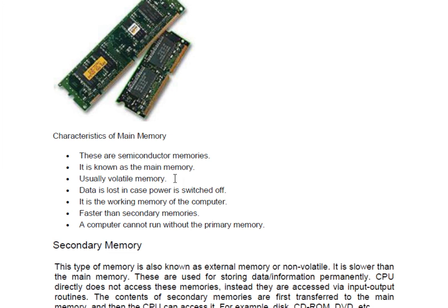Data is lost in case of a power switch-off, as explained. Primary memory is also known as working memory for the computer — while we are working with the computer, it is always active; otherwise we can't do work. It is faster than secondary memory. Most importantly, the computer cannot run without primary memory — even to start the computer, primary memory is needed, that is, both ROM and RAM.